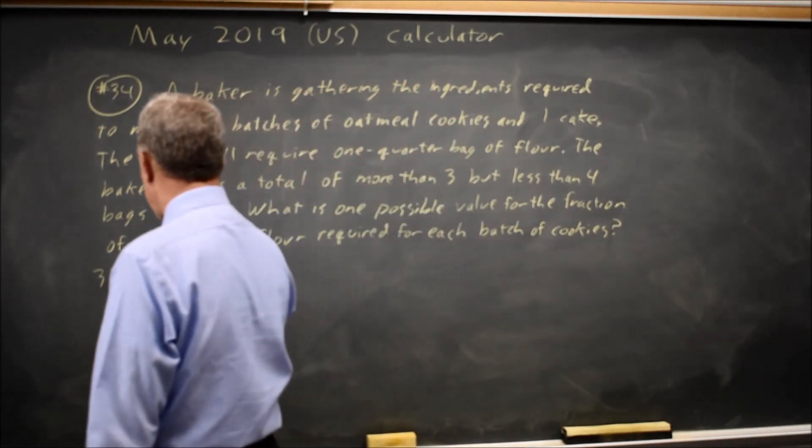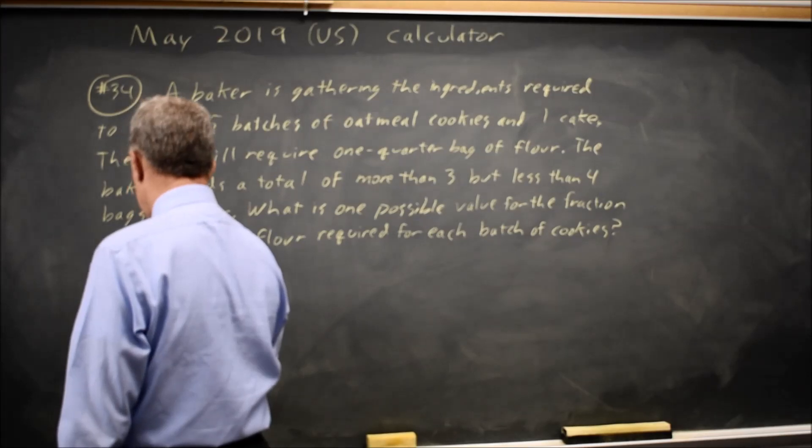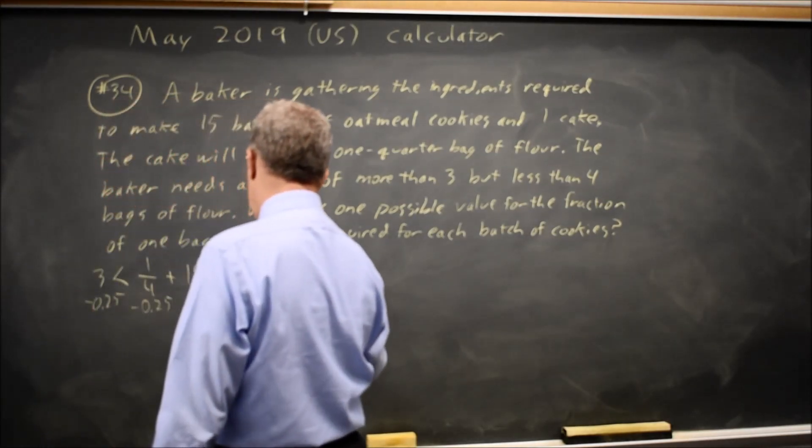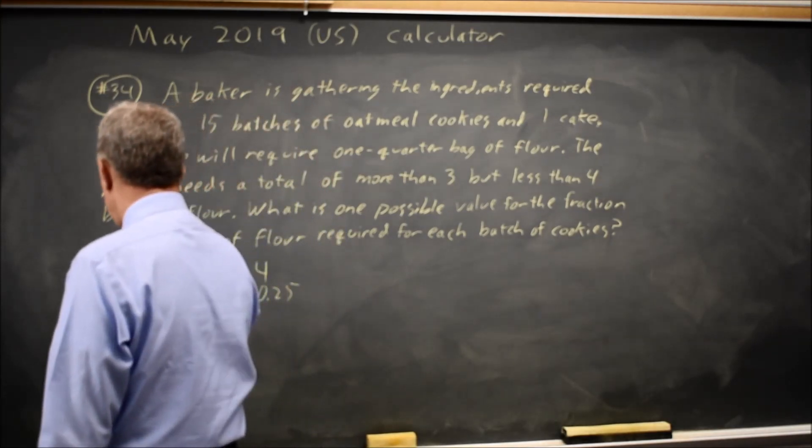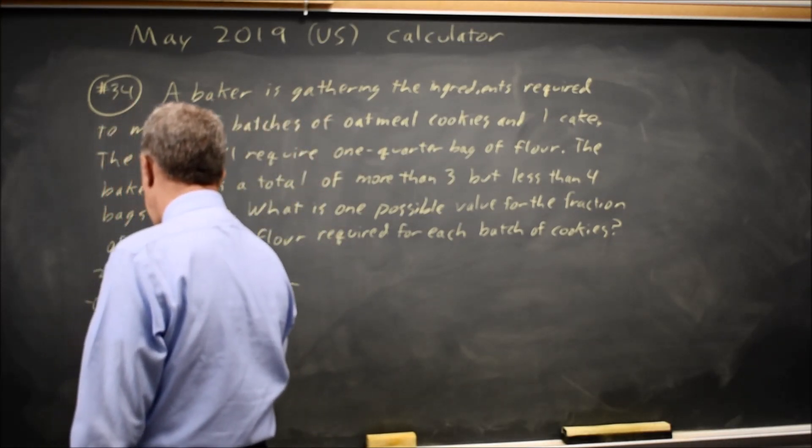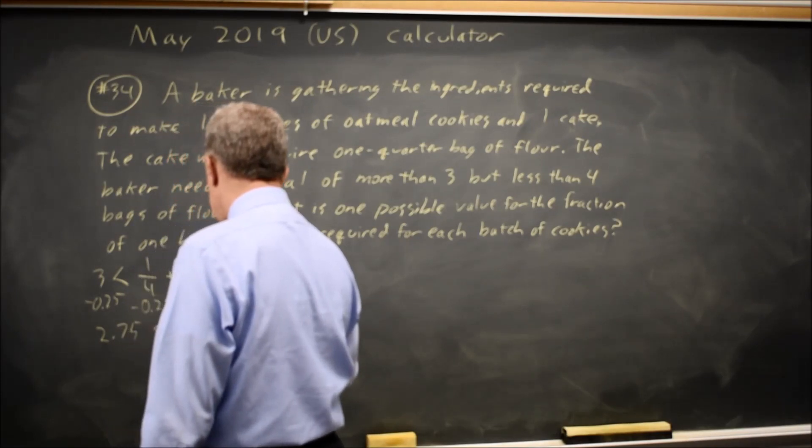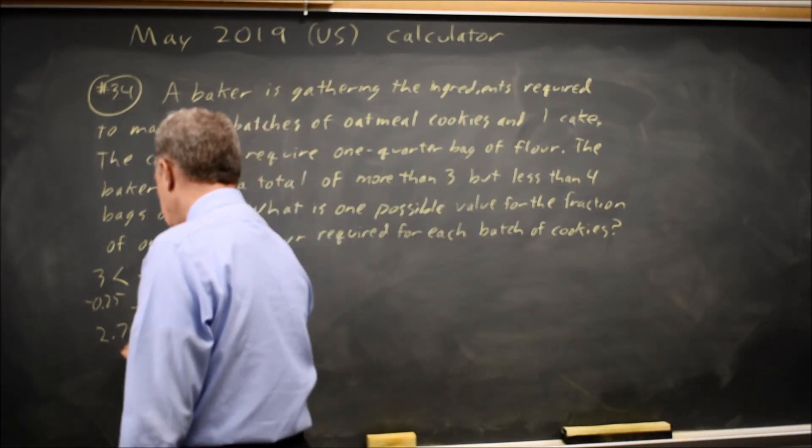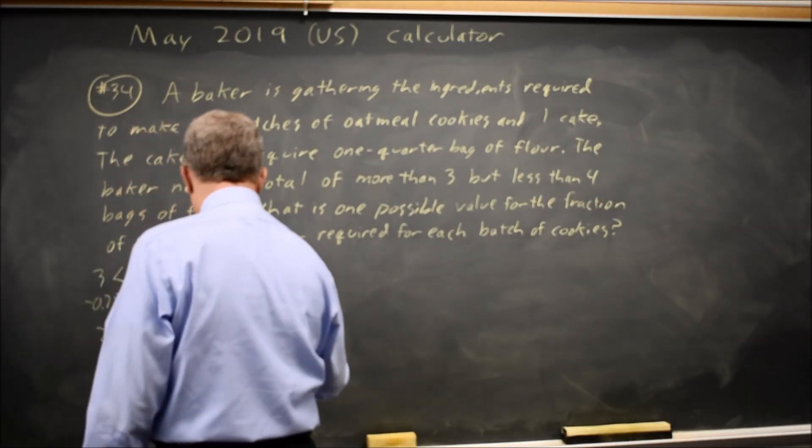So if I subtract 0.25 from each, I get 2.75 less than 15x less than 3.75, and if I divide by 15, I get an inequality for x.